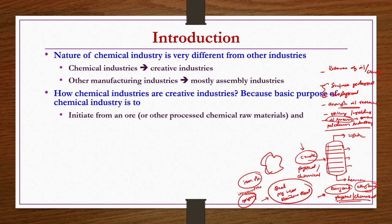Once the ore is dried, size-reduced, washed, cleaned, and dried, it is ready for the proper reaction in furnaces to produce pig iron. This is true for most things — you may have an ore or you may have a processed chemical raw material.